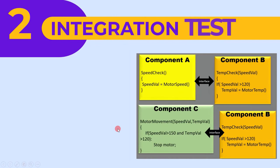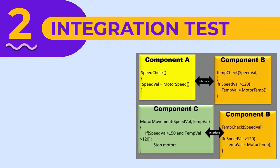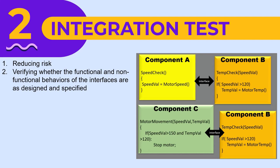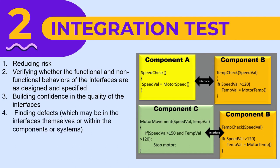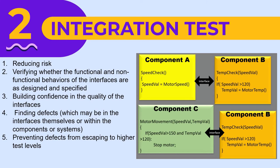The second level is integration testing, which could be component integration or system integration test. The first objective is to reduce defect. The second objective is verifying the functional and non-functional behaviors of the interface — the word interface here is important. The third objective is building confidence in the quality of the interfaces. The fourth objective is finding defects, which may be in the interfaces themselves or within the components or systems. And the last objective is preventing defects from escaping to higher test levels.